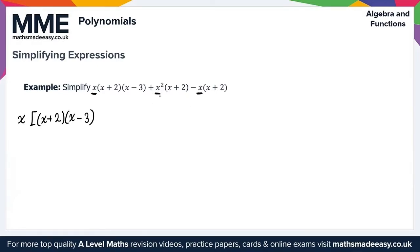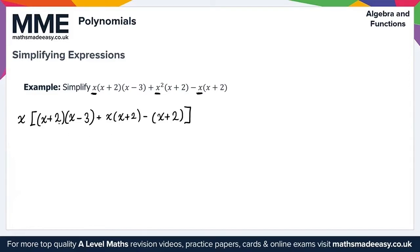Now what we actually want to do is simplify this fully. So we scan along again to identify any common factors. I notice straight away we've got an (x plus 2) in each term. So therefore we can take (x plus 2) out as a common factor, writing it as x times (x plus 2) times [...].